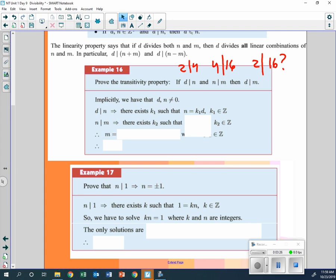Go ahead and put that in. N is equal to k1 times d. And of course, we have to say k1 is an element of Z. So what do you think happens when we say n divides m? Same thing. M is equal to k2 times n, where k2 is an element of Z.